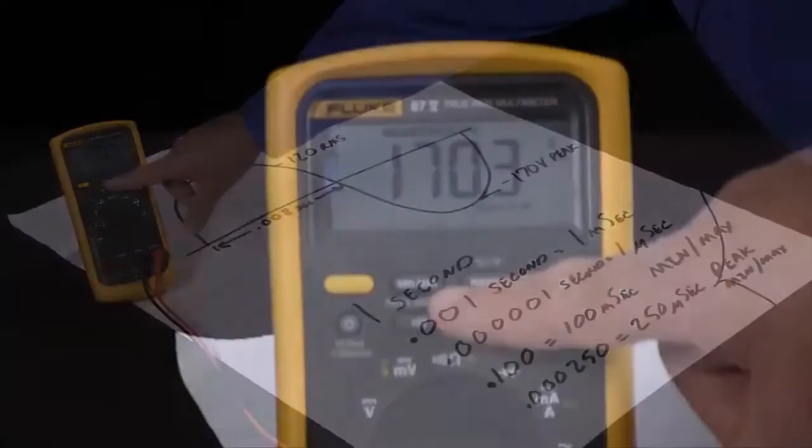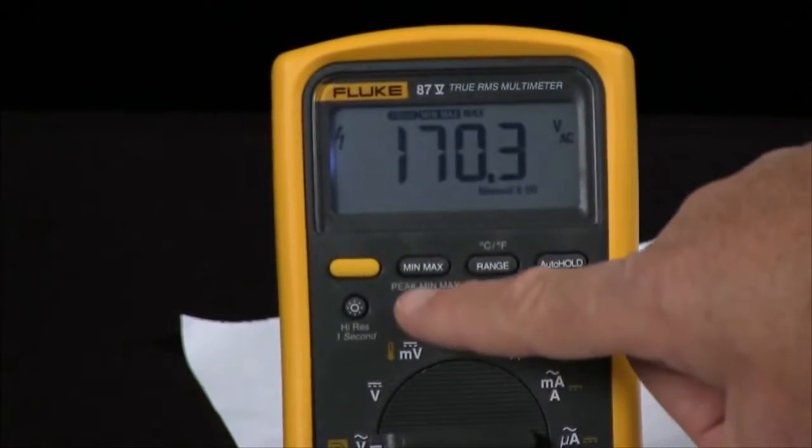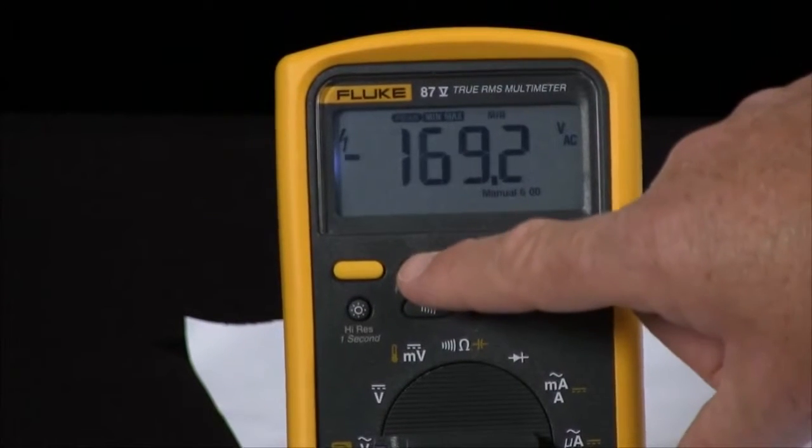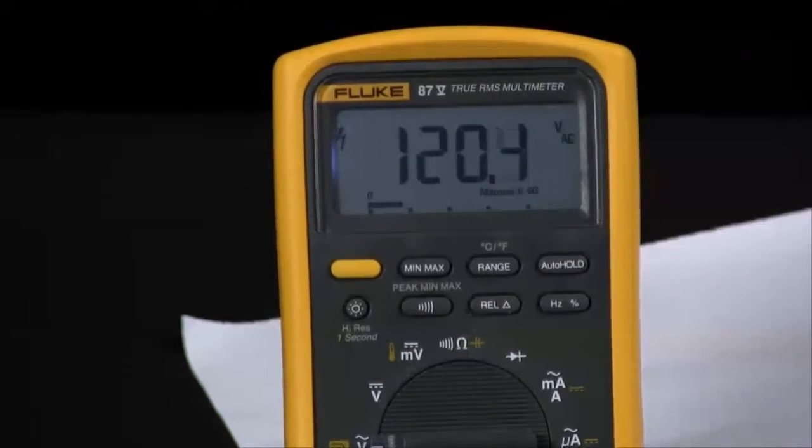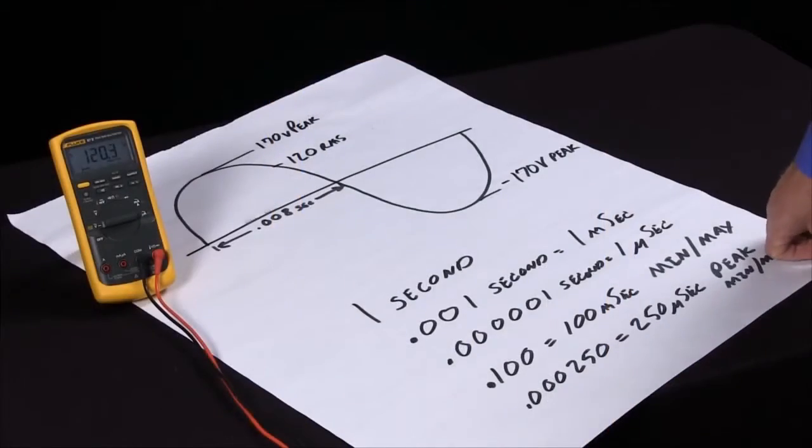So in review, to activate the peak min max, I hit the min max key and then the peak min max key. If I just hold in the min max key, it goes back into normal mode. So that's how I use my peak min max on the Fluke 87 multimeter.